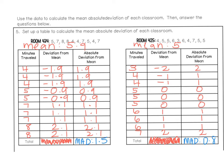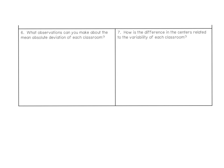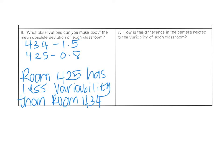If you're unsure or didn't get something correct, raise your hand and I can come help you, or use my work to figure out what you did wrong. Question six says: what observations can you make about the MAD value of each classroom? Room 434 had a MAD value of 1.5 and room 425 had a MAD value of 0.8. The closer your MAD value is to zero, the less variability you have — it tells you that each data point is close to the mean. So room 425 has less variability than room 434, meaning the data is more compact and not as spread out.